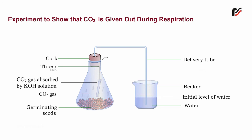The carbon dioxide released is absorbed by the potassium hydroxide present in the hanging test tube in the conical flask. This creates a vacuum in the conical flask, which causes an upward movement of water in the delivery tube, leading to a change in the level of water in the delivery tube.